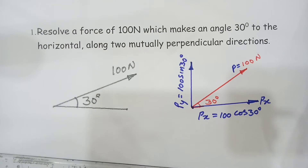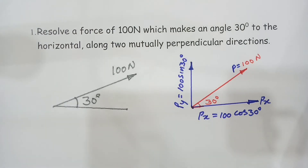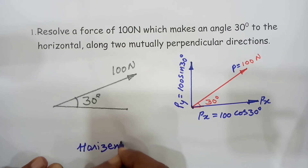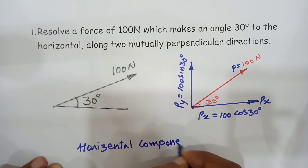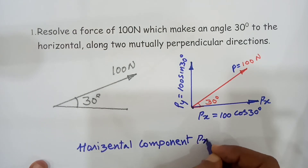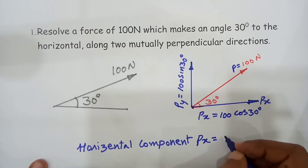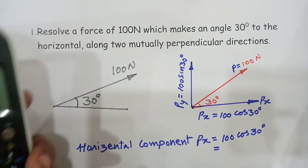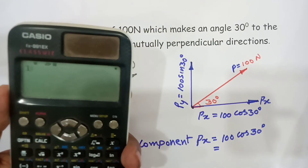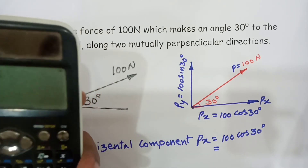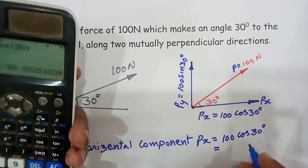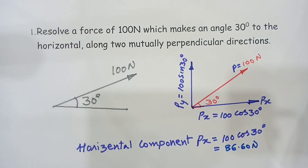The horizontal component Px is equal to 100 cos 30 degrees. This value is 100 into cos 30 degrees, which equals 50 root 3, that is 86.60 newtons. Now, what is the vertical component?